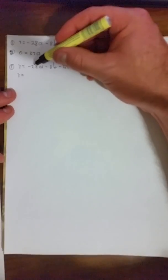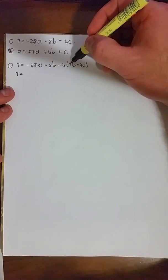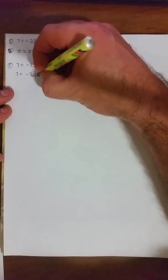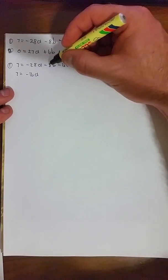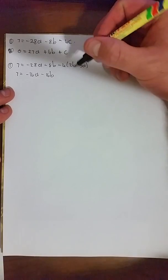7 = -28a - 8b. That's not going to work. -28a + 12a = -16a. Now, -8b - 8b = -16b.